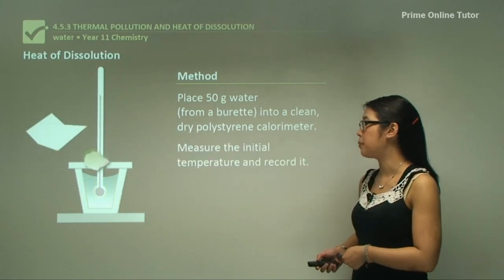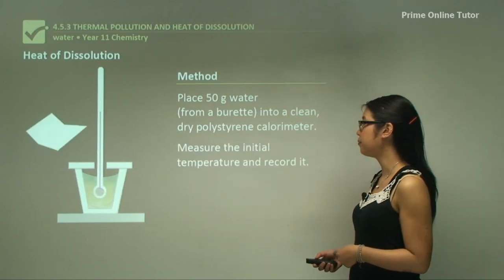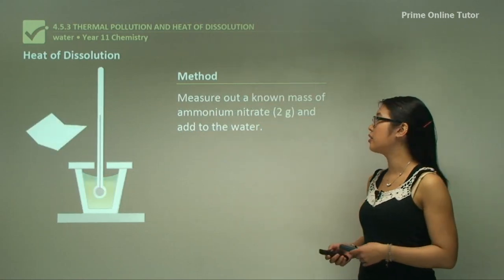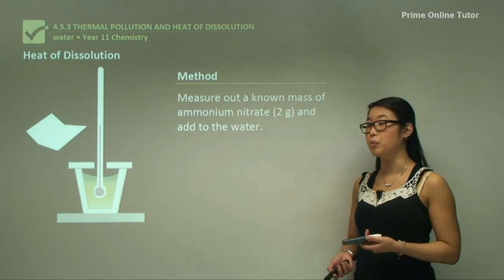Next we need to measure the initial temperature and record it. And then measure out a known mass of ammonium nitrate, just say 2 grams, and add this to the water.